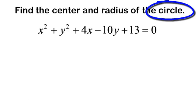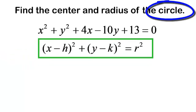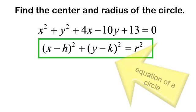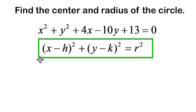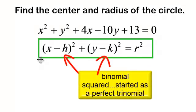They do tell me that it is a circle, and my equation for a circle is x minus h in parentheses squared plus y minus k in parentheses squared equals r squared. I have a binomial squared, which means I must have started with a perfect trinomial. I must have factored a perfect trinomial to get a binomial squared.